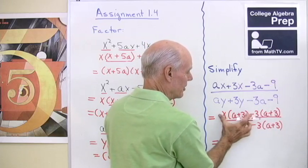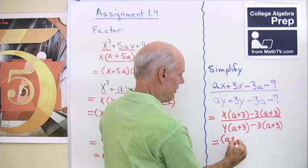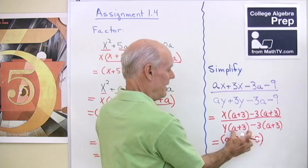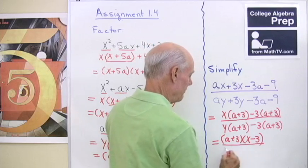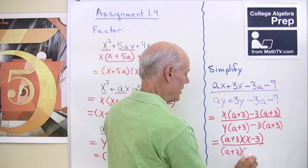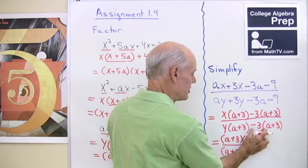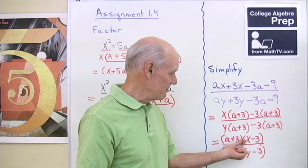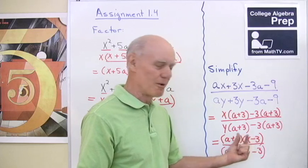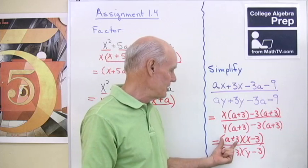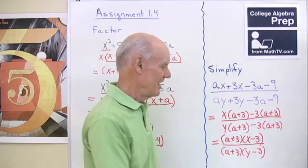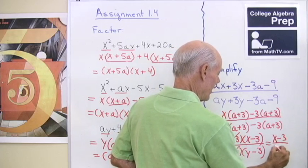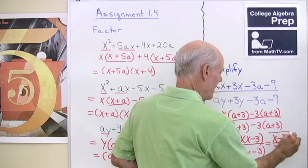Now, a plus 3 is common to this term and this term. I'll take it out in front, a plus 3 times what's left, x minus 3. a plus 3 is common to these two terms, so I'll take it out in front, a plus 3, and I'll write down what's left, y minus 3. Now, I can divide out common factors, because it's multiplication here, so I know this number and this number are multiplied together. They're each factors of this numerator, same with the denominator. So I'll divide out the common factor, a plus 3, and get x minus 3 divided by y minus 3. And that's the answer.